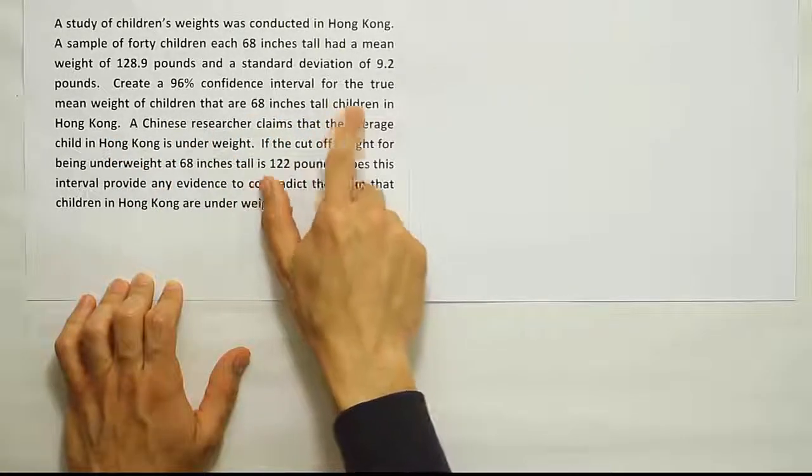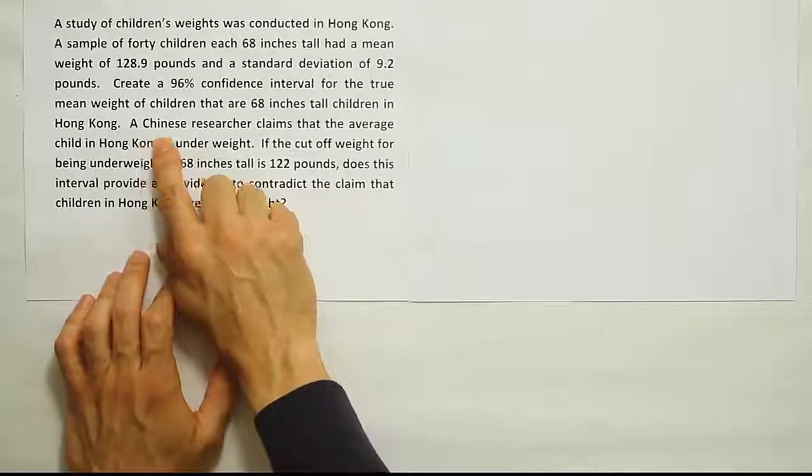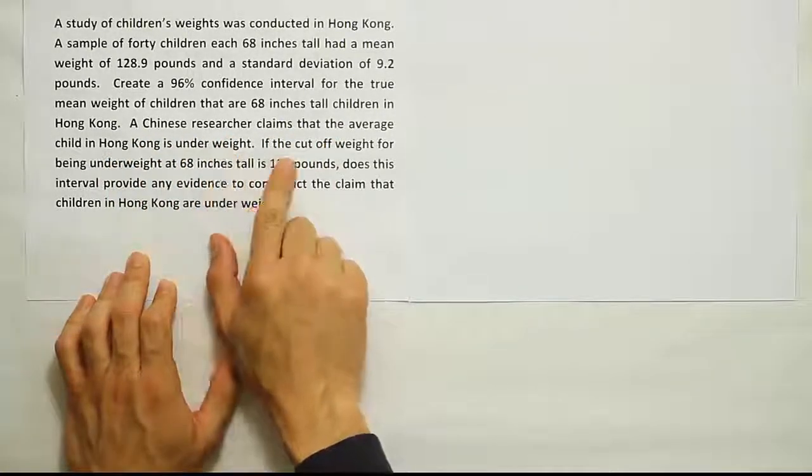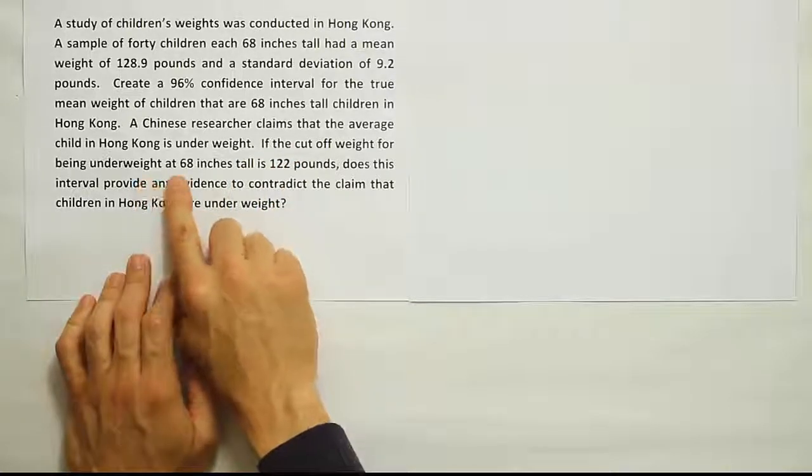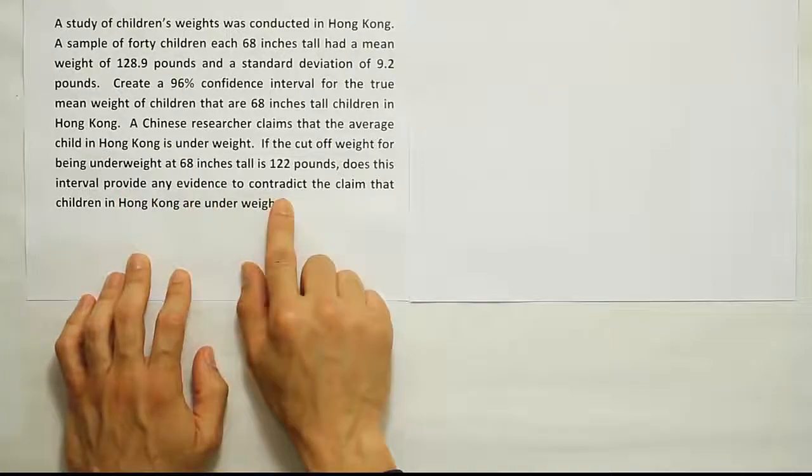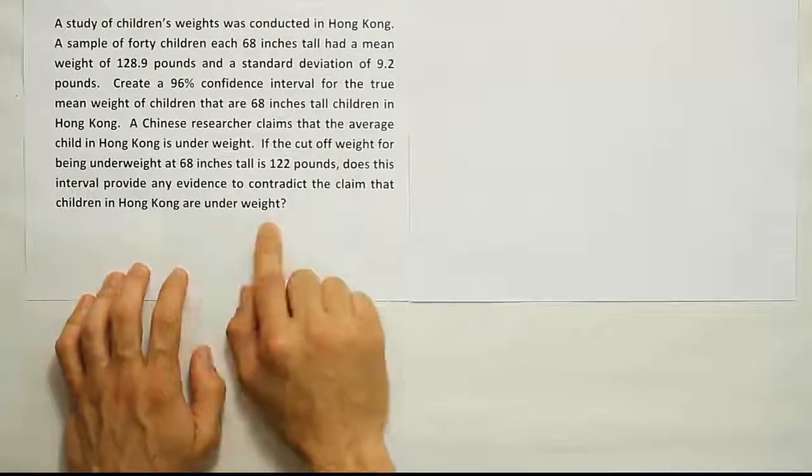Okay, this is an extra word, children, there. It doesn't need to be there. But anyways, it says a Chinese researcher claims that the average child in Hong Kong is underweight. If the cutoff weight for being underweight at 68 inches tall is 122 pounds, does this interval provide any evidence to contradict the claim that children in Hong Kong are underweight?